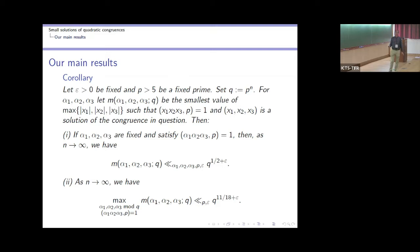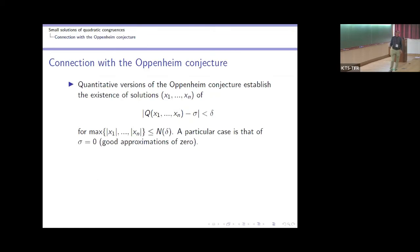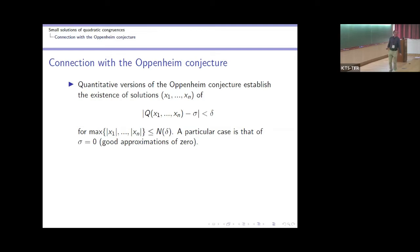We have solutions where x₁, x₂, x₃ are all less than q^{11/18 + ε}, no matter how we choose α₁, α₂, α₃. The link to the Oppenheim conjecture: quantitative versions establish the existence of solutions approximating a given σ within distance δ, and we want x₁, ..., xₙ as small as possible — a function of δ.